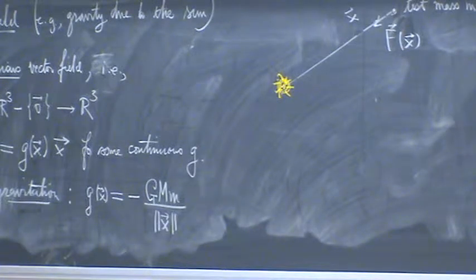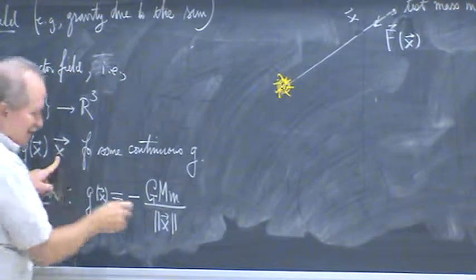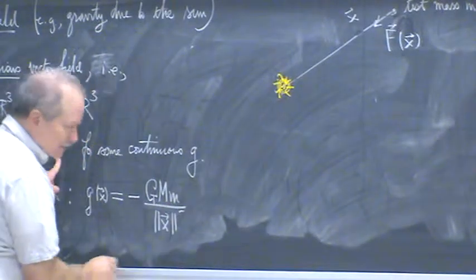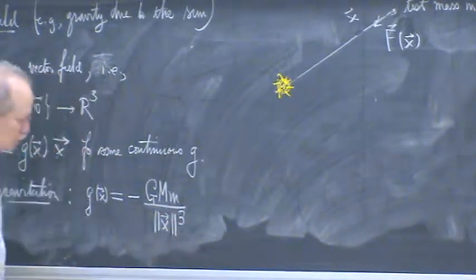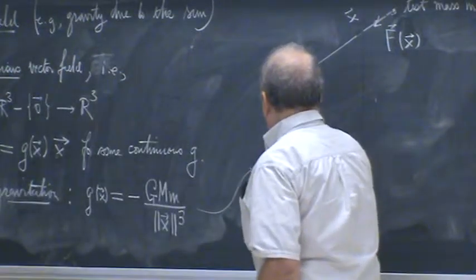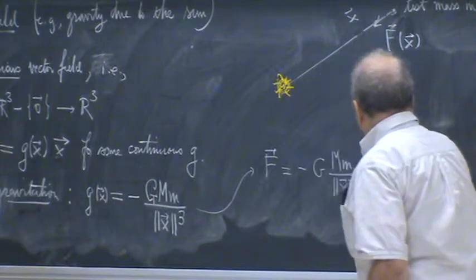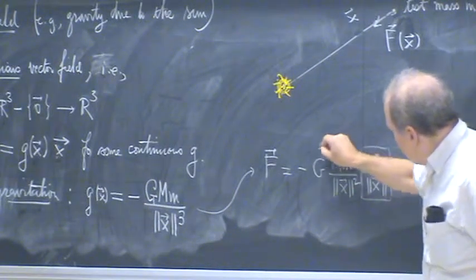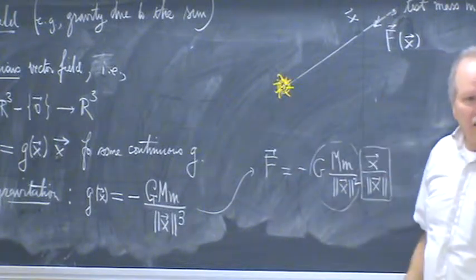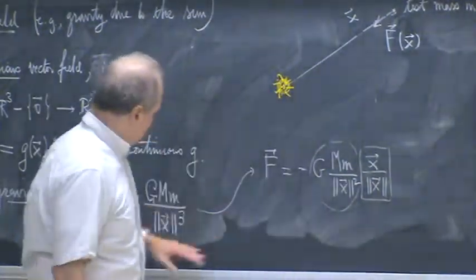So you might think to divide by the magnitude of X squared — but why is that wrong? Because I've got the X vector, which has a length, so I have to divide by the length of that as well. So the denominator should be the magnitude of X cubed. You end up with minus G times the product of the masses over magnitude X squared, times the unit vector X over magnitude X — so you get a cube overall.